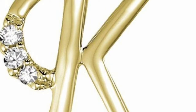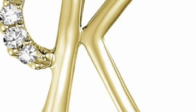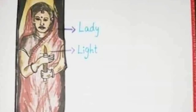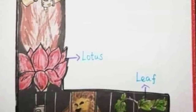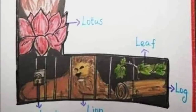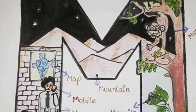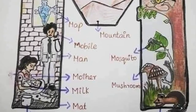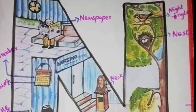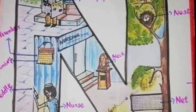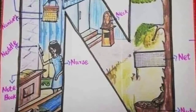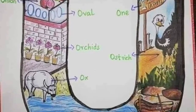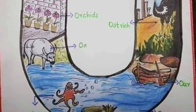K for king, L for lady, M for mobile, N for nurse, O for orange.